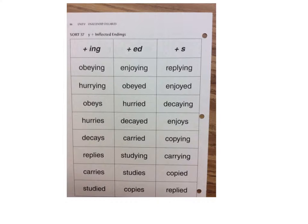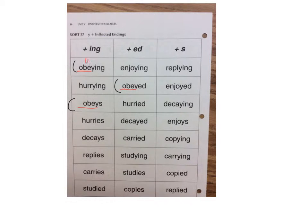We're going to look at a couple of words. I'm going to look at obeying, obeyed, and obeys. If you look at the base word — or root word — obey, you can see that it ends in y, but it's a vowel and then a y. Vowel and then a y, so you just add the ending.